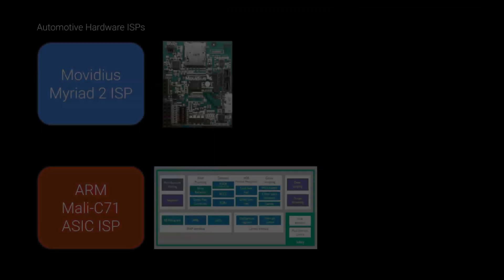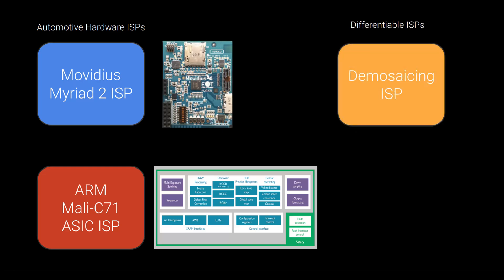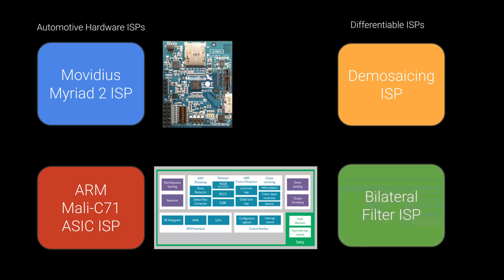For the hardware ISPs, we use the Movidius Myriad 2 and the ARM Mali C71 ISP module. For the differentiable ISPs, the first one employs the bilinear demosaicing operation and is referred to as demosaicing ISP. The second one performs bilateral filtering and is referred to as bilateral filter ISP.